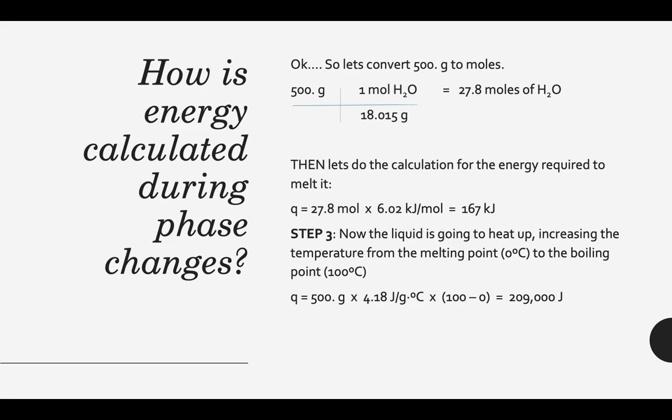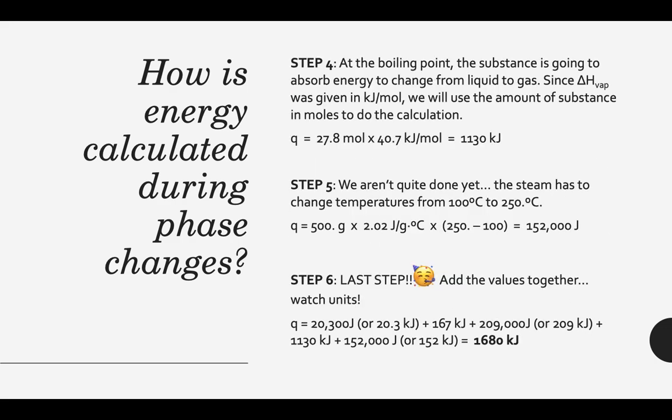Once it melts, we heat up the water from 0°C to the boiling point of 100°C — that's a 100-degree swing, so ΔT = 100°C. Using q = m × specific heat of liquid water × ΔT gives 209,000 joules. That's joules, not kilojoules. Then at the boiling point, the substance goes from liquid to gas — another phase change. We multiply 27.8 moles by the enthalpy of vaporization (40.7 kJ/mol) and get 1,130 kilojoules of energy required to evaporate the substance.